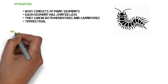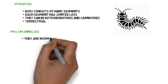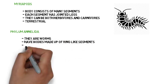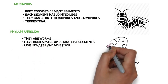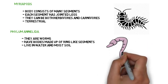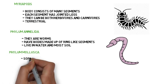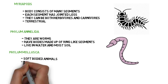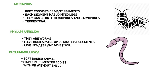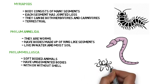Phylum Annelida. They are worms. They have bodies made up of ring-like segments and they live in water and moist soil. An example of an annelid is an earthworm. Phylum Mollusca are soft-bodied animals, have unsegmented bodies, and can be with or without a shell. Examples of Mollusca include octopus, jellyfish, and squid.